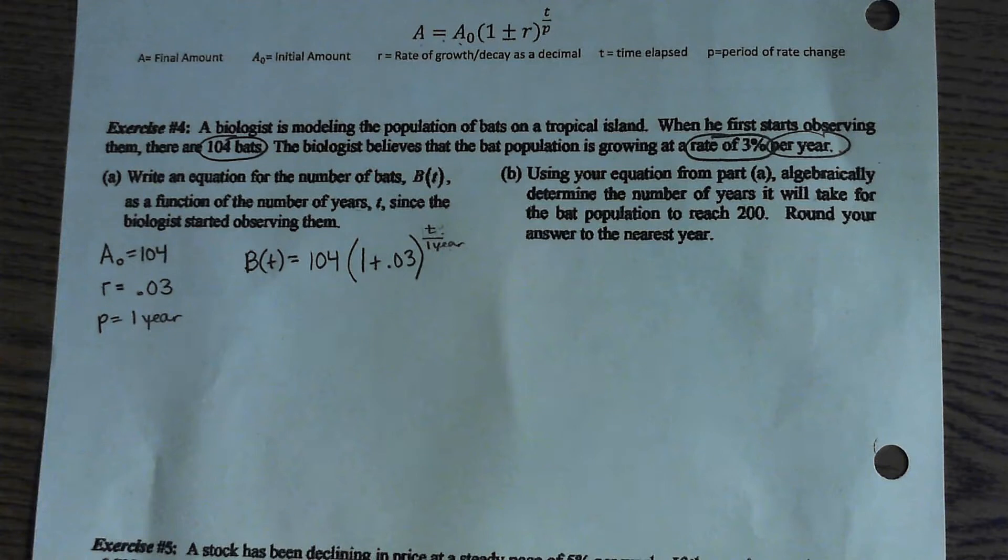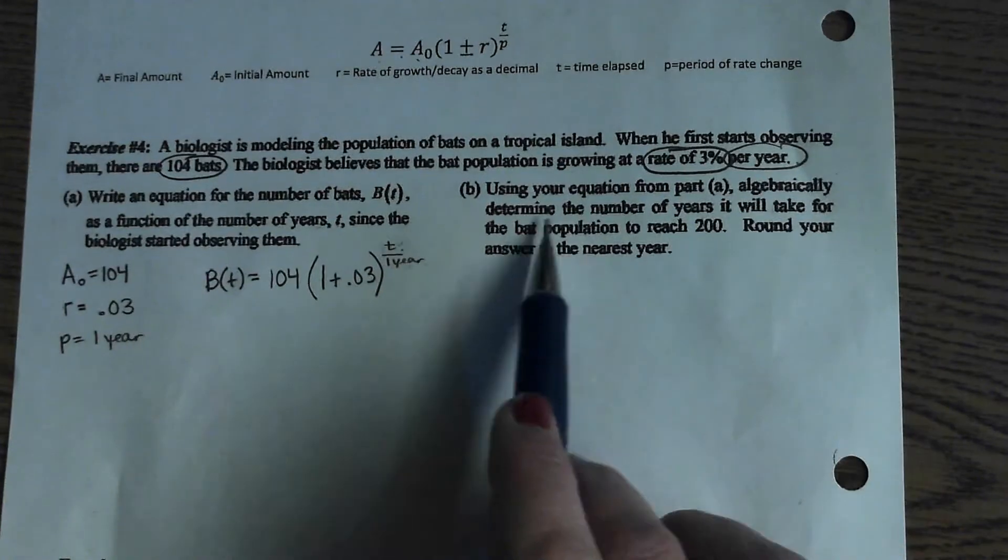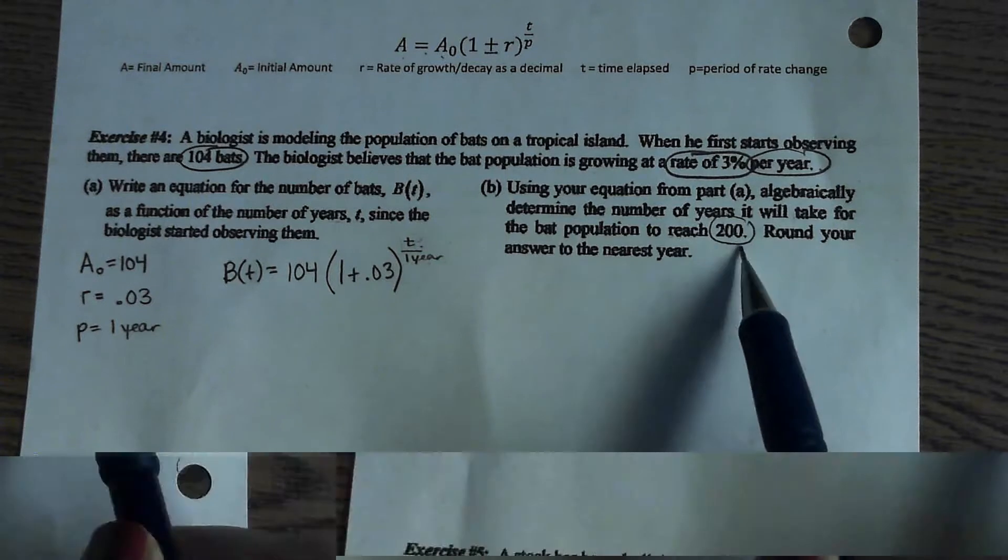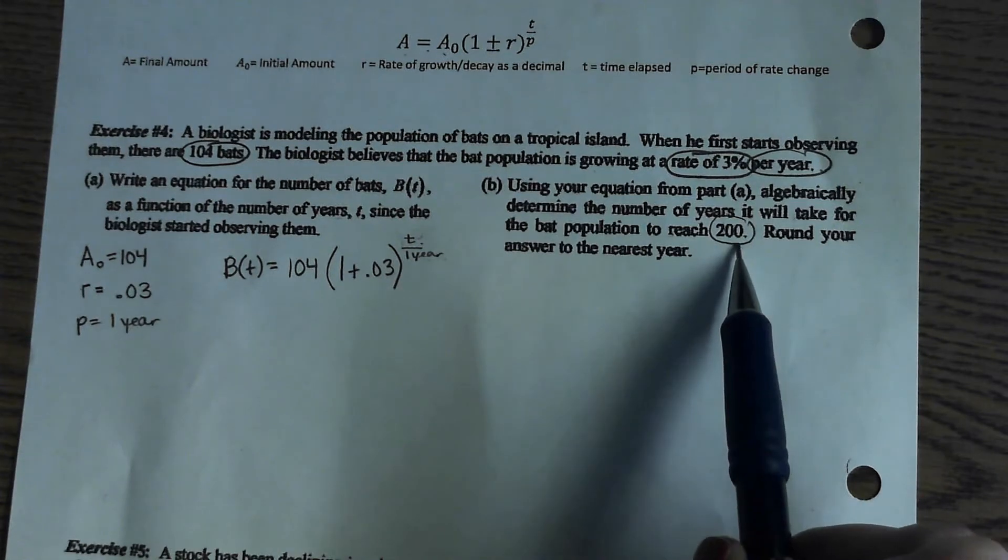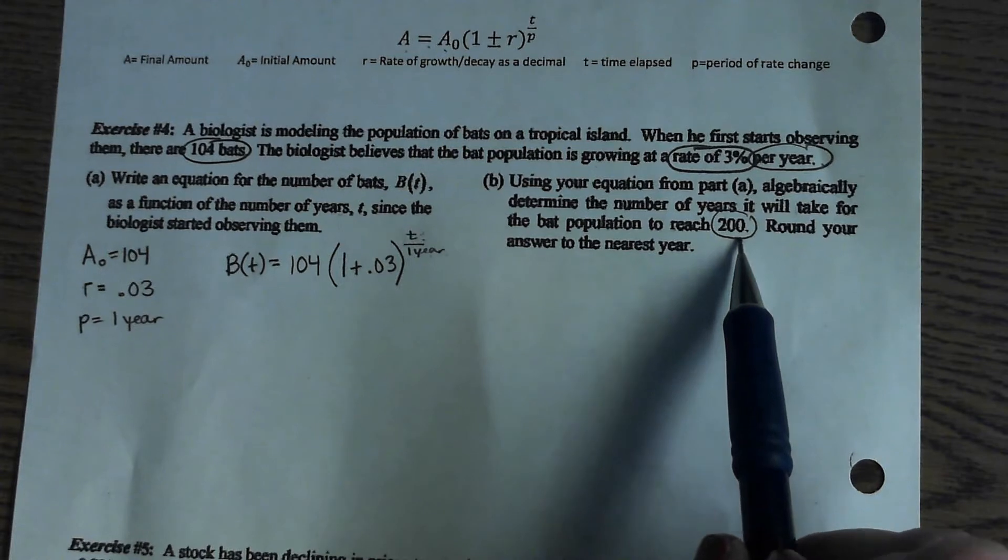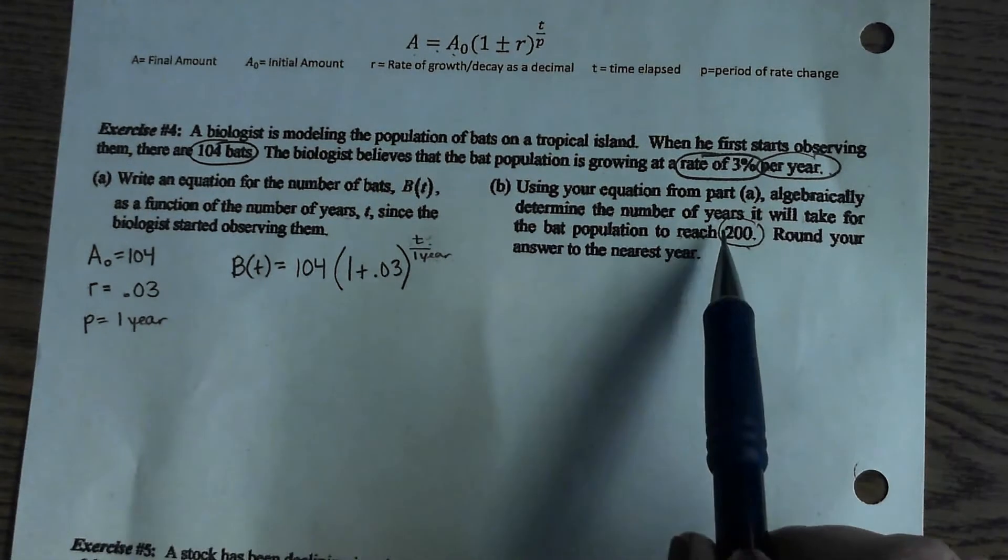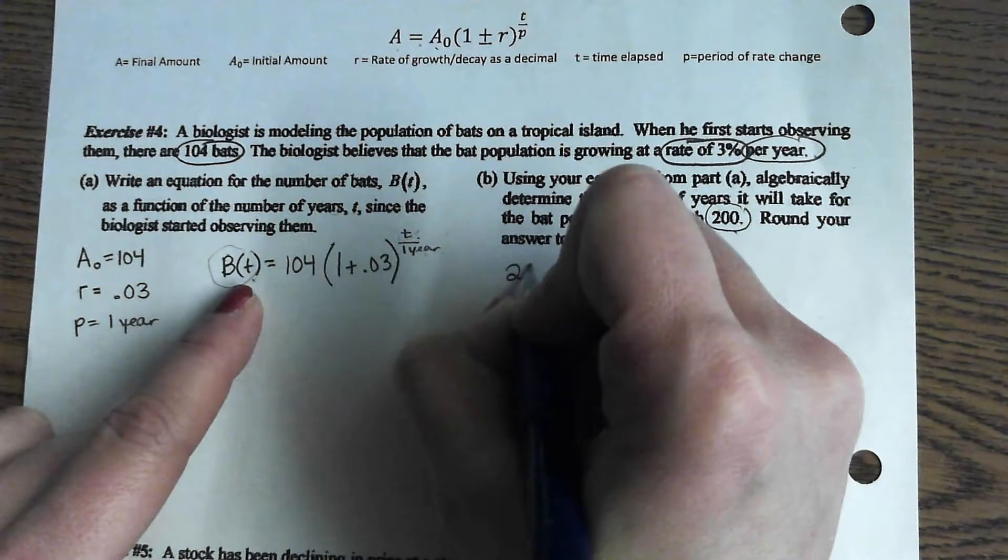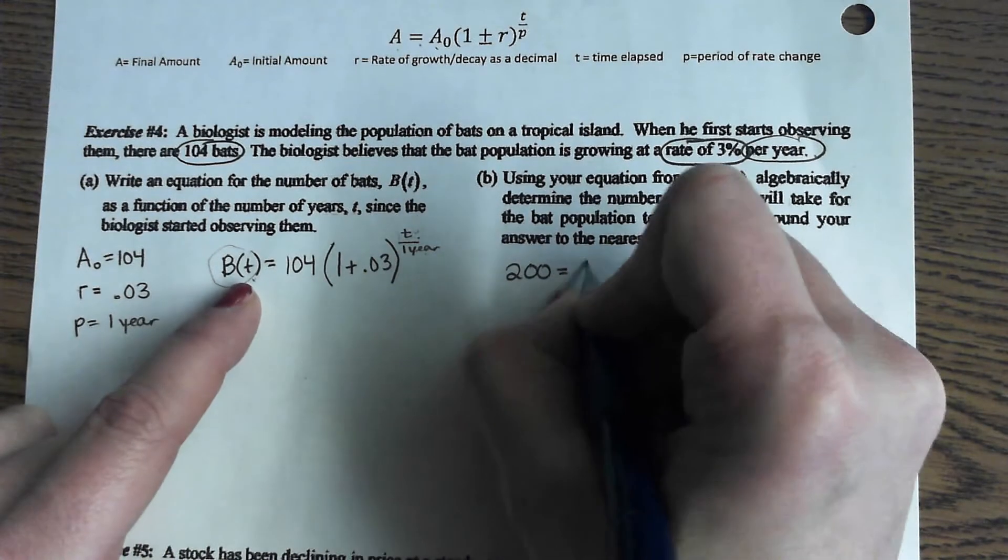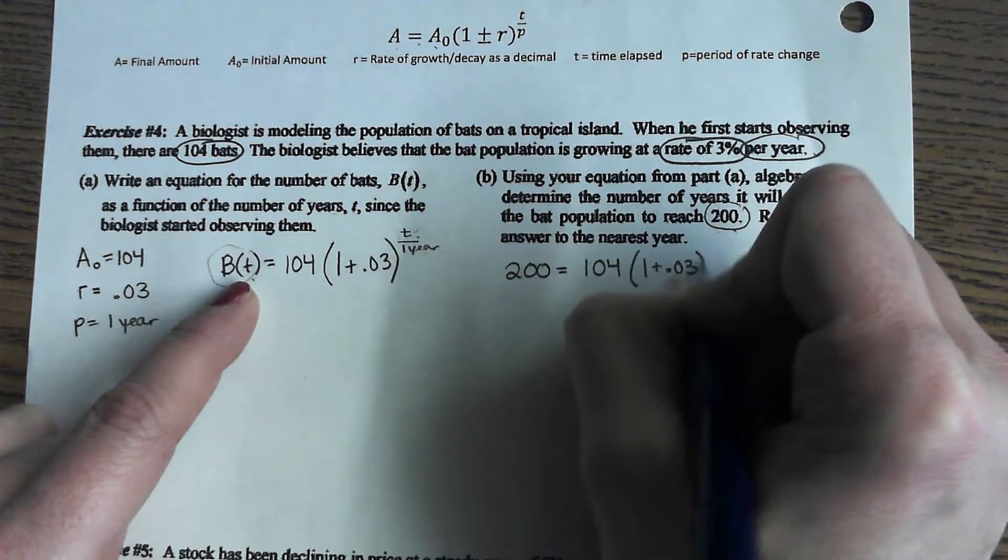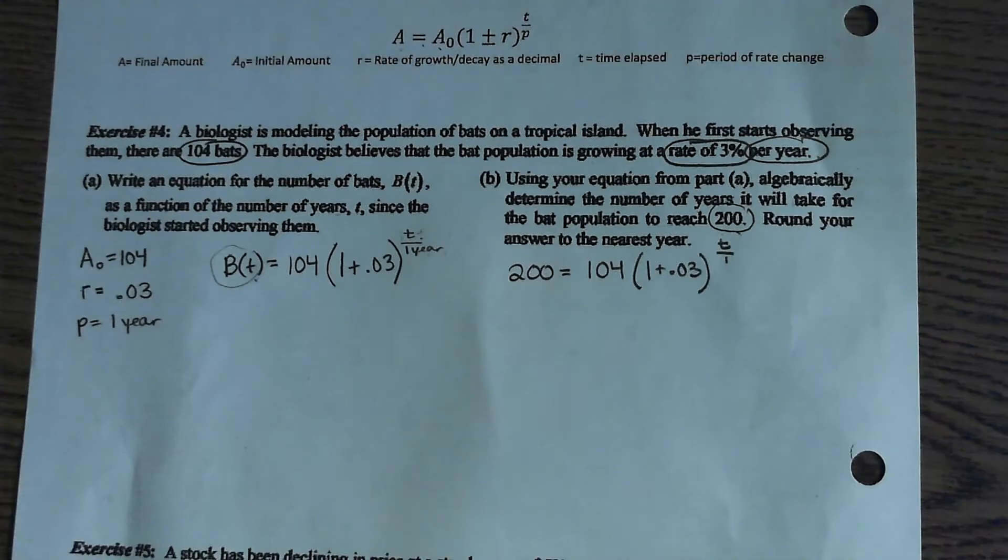So, part B wants us to algebraically determine the number of years it will take for the bat population to reach 200. So, when they give us 200 here they're giving us the final population right? Starts at 104, they want to know when will it become 200 so they're giving us the final number. They're giving us that that's 200 and we have to solve for T.